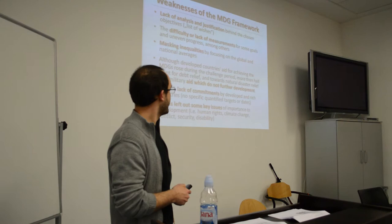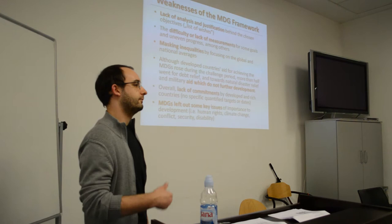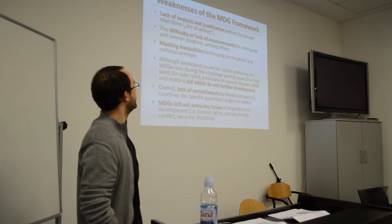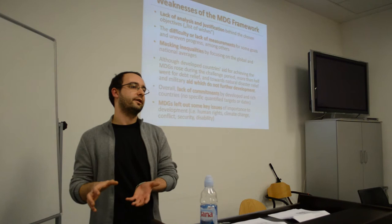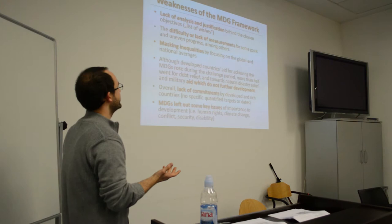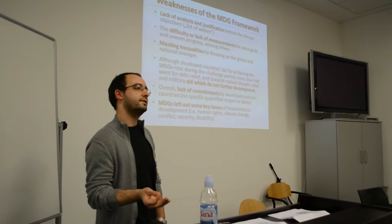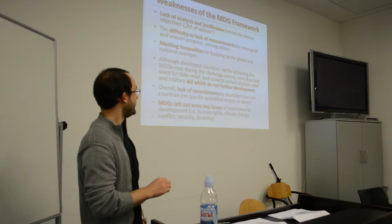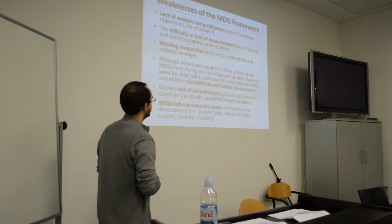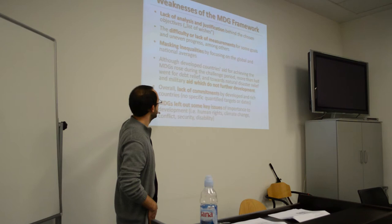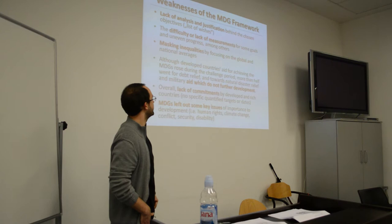What are the problems of the Millennium Development Goals framework? First, there was a lack of analysis and justification for the chosen objectives, which reduced the project to little more than a wish list. Second, certain measurements were not available to actually measure success. Additionally, many inequalities were obscured by aggregate indices such as global and national averages. The most important problem was the lack of commitment by developed and rich countries, and the fact that the MDGs left out key issues such as human rights and environmental sustainability.